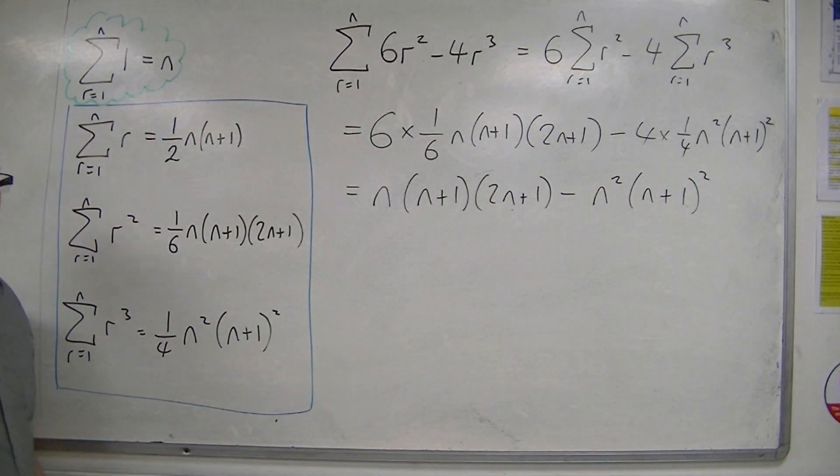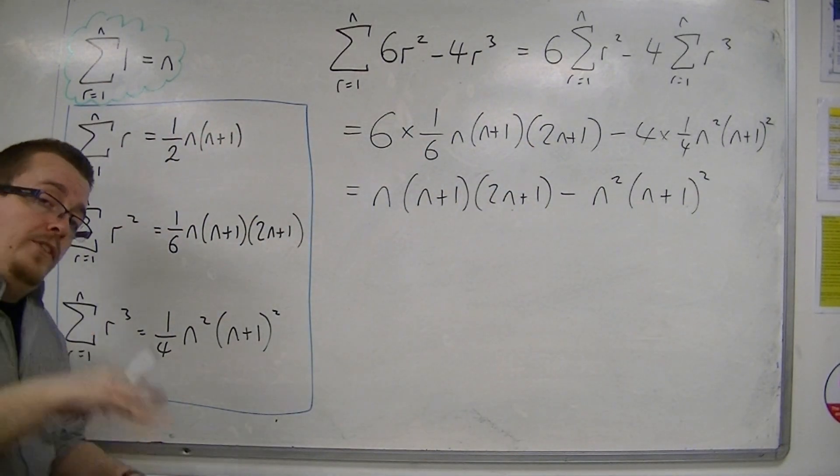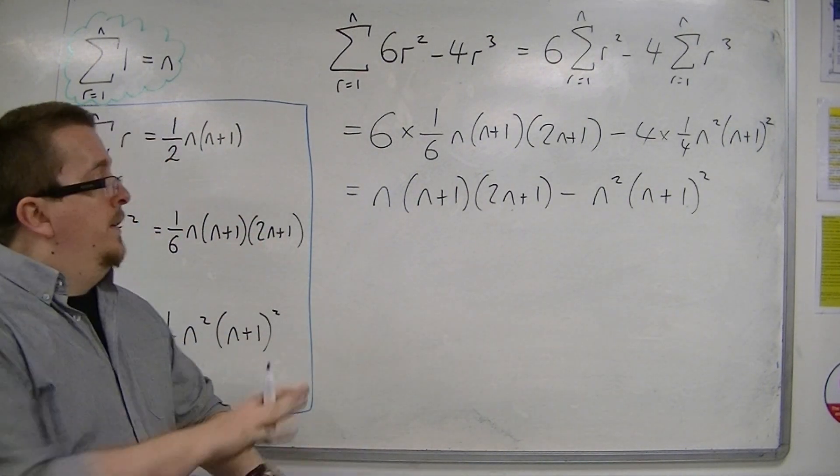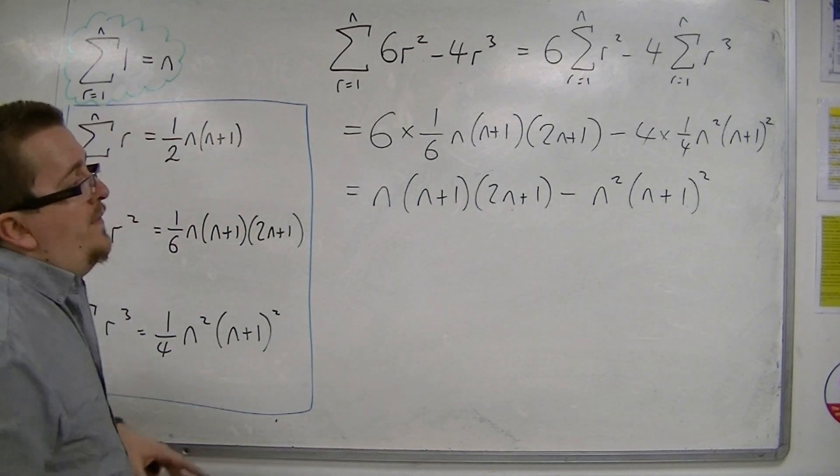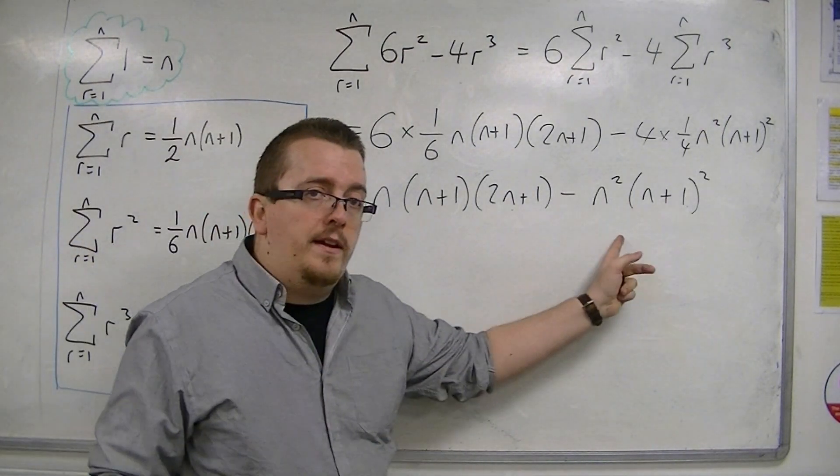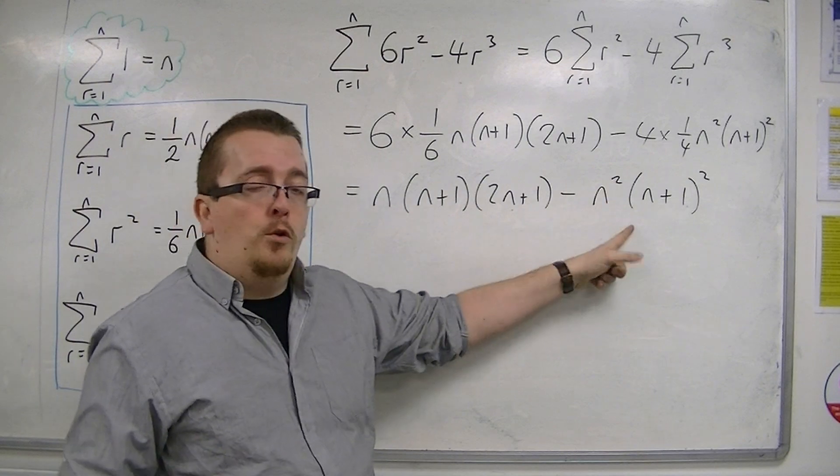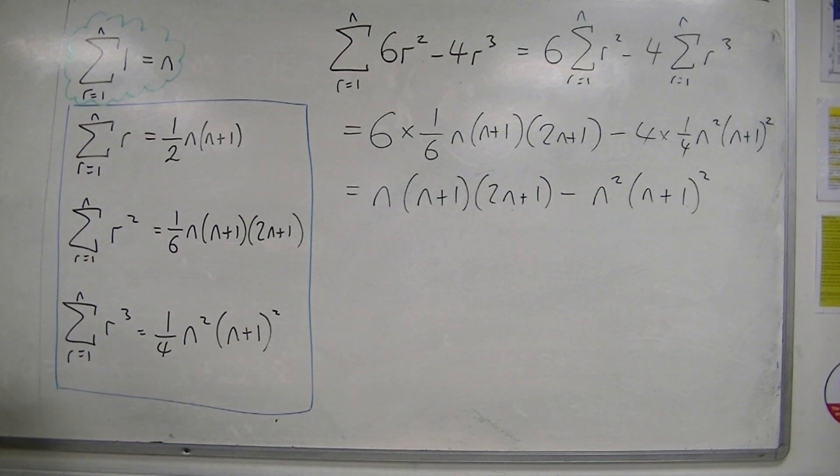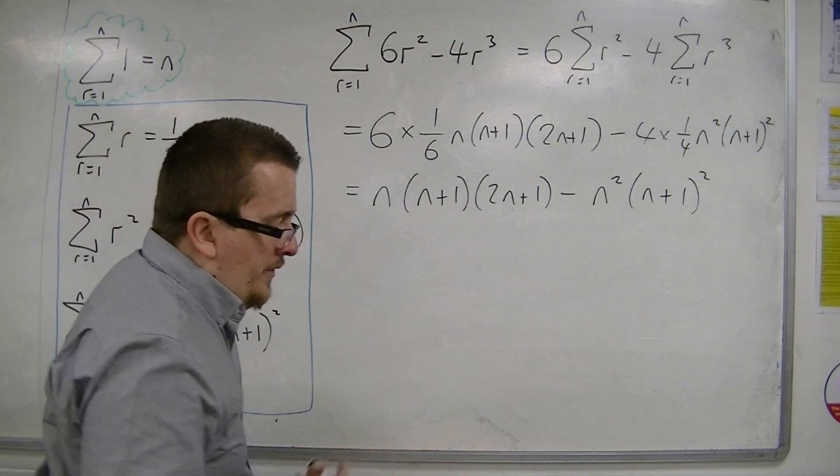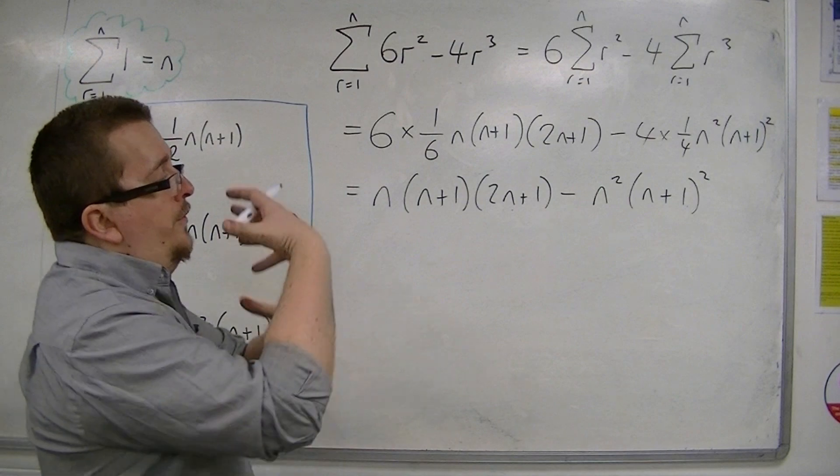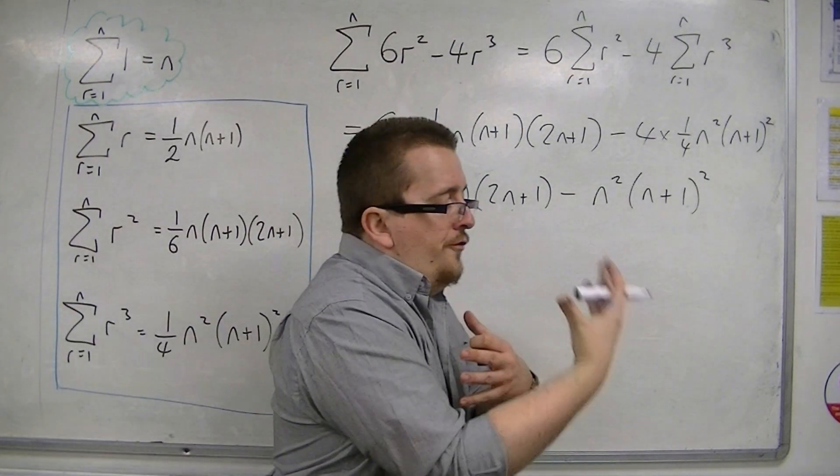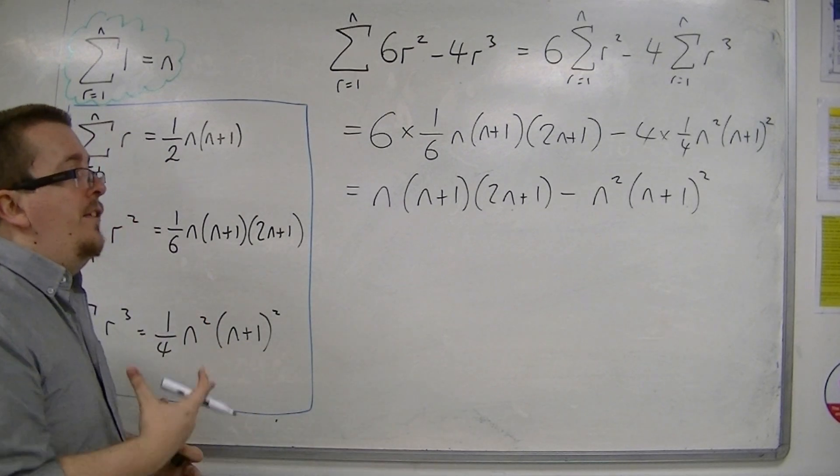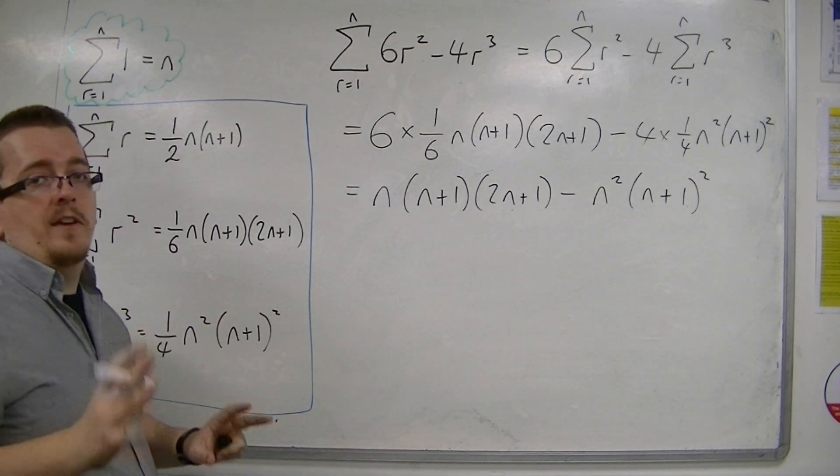Now, we want to factorise this. So, what you want to do is definitely not expand the brackets. The problem with expanding the brackets will be that you will end up with a quartic, because you'll have an n to the 4. It will be incredibly difficult to factorise that from scratch. So, what you want to do is you want to factorise it straight off, and only if you cannot see a factorisation should you ever expand the brackets.